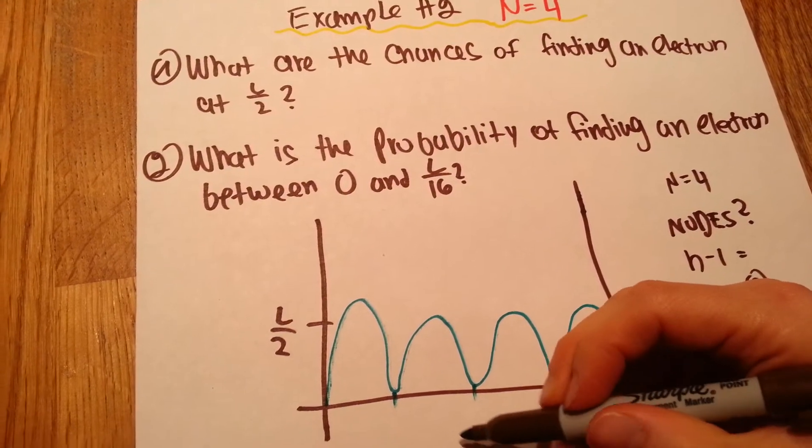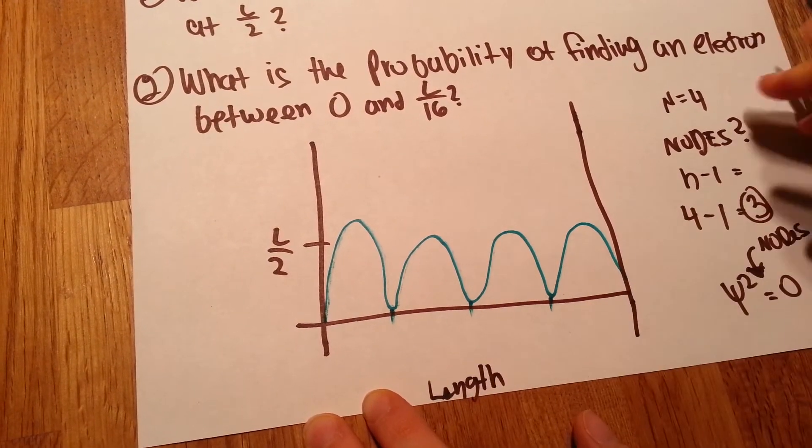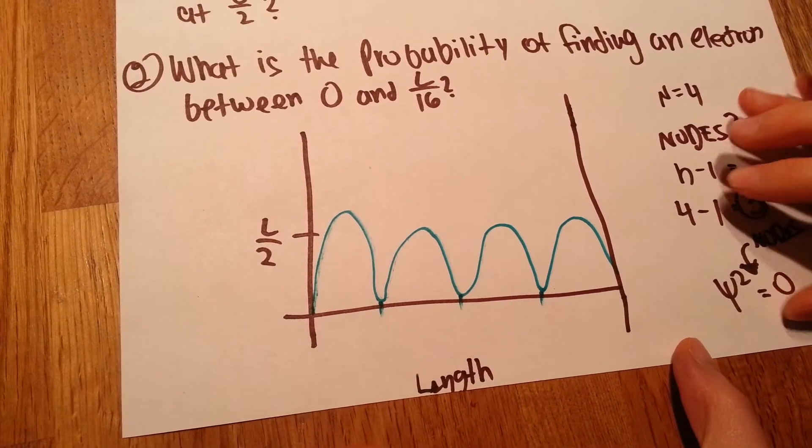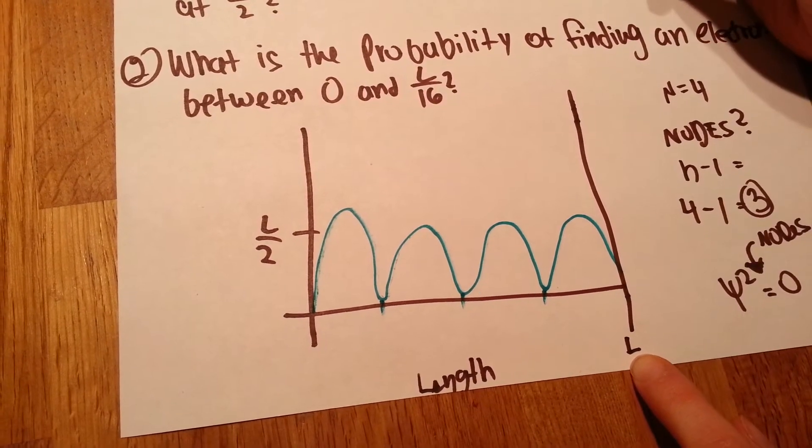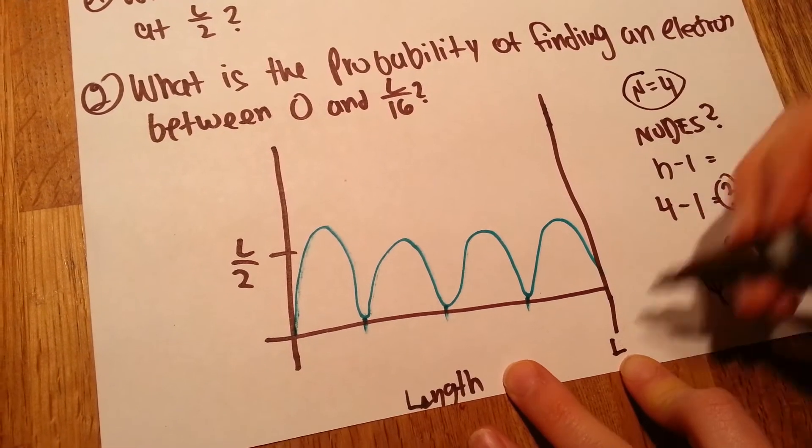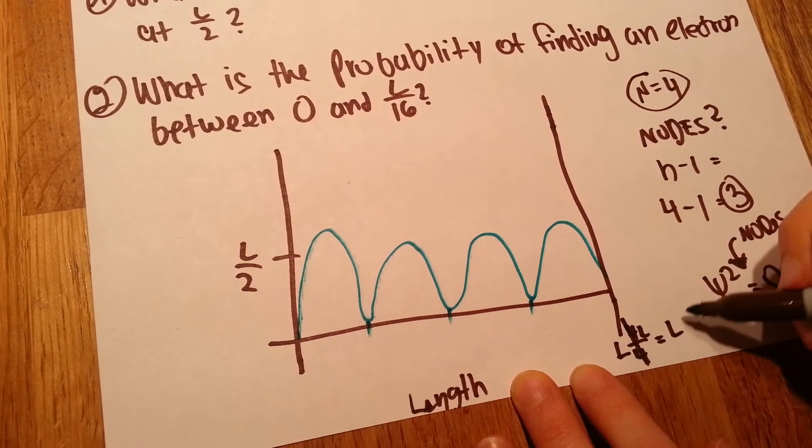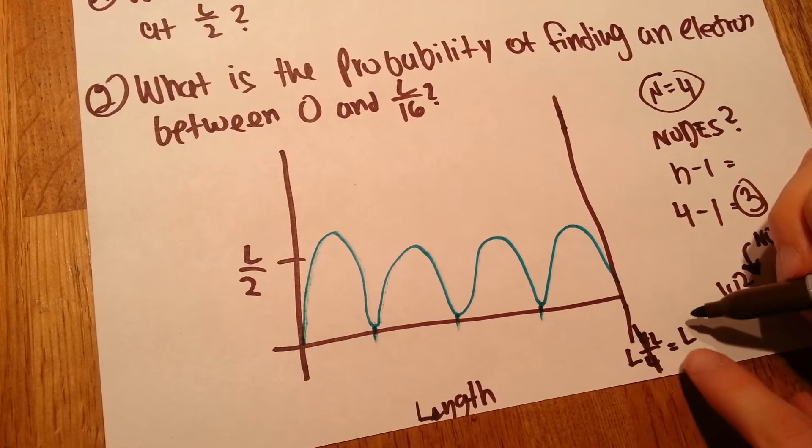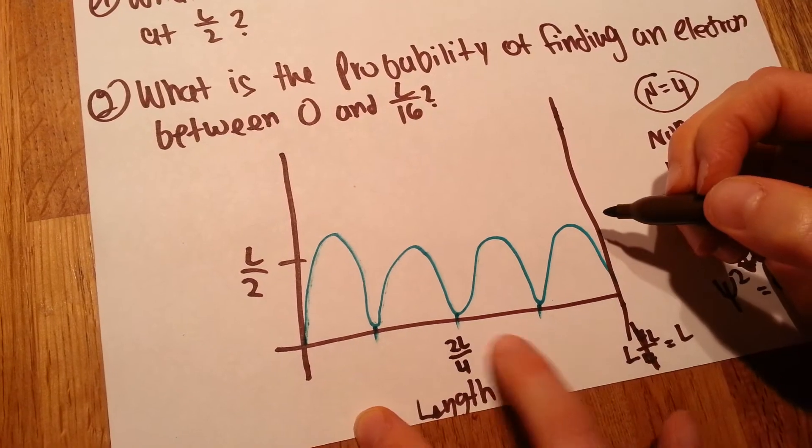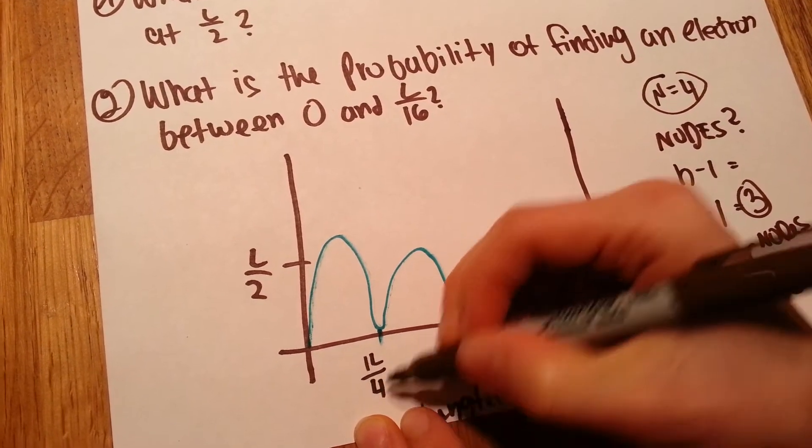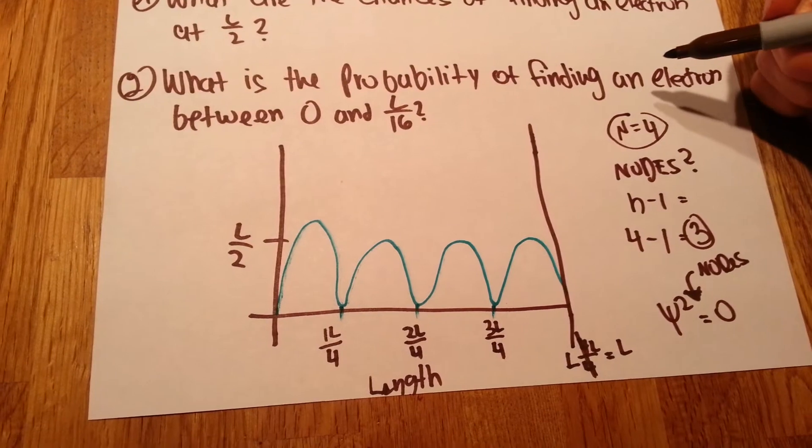So now let's try to label the x-axis. The x-axis is the length, the length of the box. Okay, so the end is always going to be L. And in this case, since our n is 4, the L is 4 over 4L equals L, because 4 and 4 just cancels out. And if we divide 4L by 4 in half, this is going to be 2L divided by 4. Therefore, this is going to be 1L divided by 4, and this is going to be 3L divided by 4. Okay, so that's it. Voila, that's our graph.